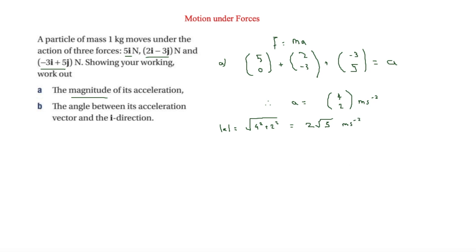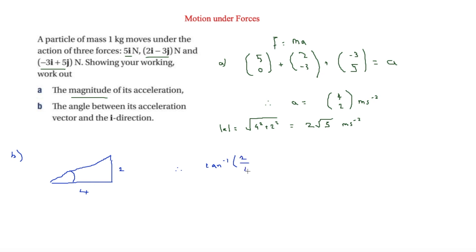In part B, we find the angle between the acceleration vector and the i-direction. Drawing a triangle, we have 4 going horizontally and 2 going up. We use inverse tan of 2 over 4, which gives us 26.57 degrees.